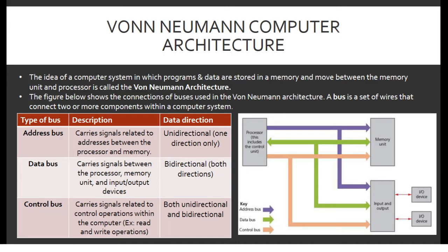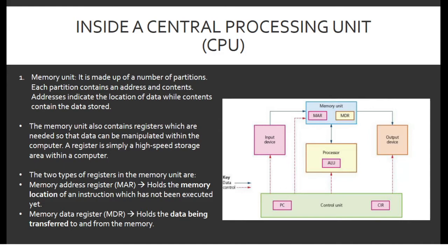Inside the CPU, the memory unit is made up of a number of partitions. Each partition contains an address and content — addresses indicate the location of data, while contents contain the data stored. The memory unit also contains registers, which are high-speed storage areas needed so that data can be manipulated within the computer. The two types of registers in the memory unit are: the memory address register (MAR), which holds the memory location of an instruction that has not been executed yet; and the memory data register (MDR), which holds the data being transferred to and from memory.